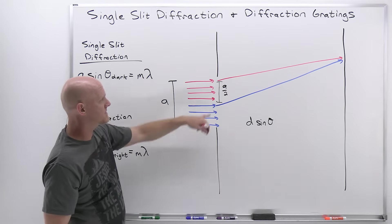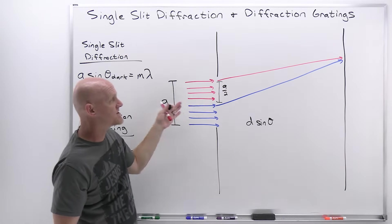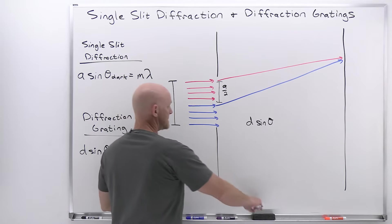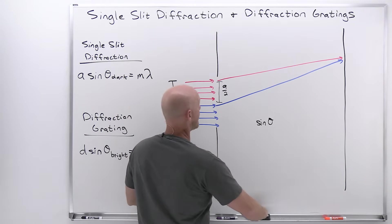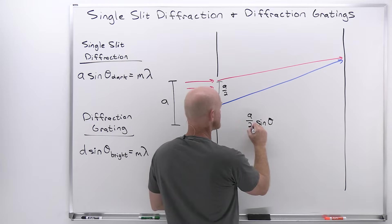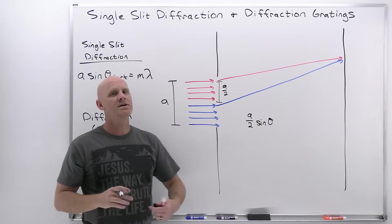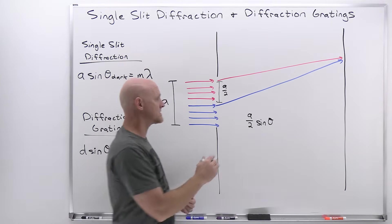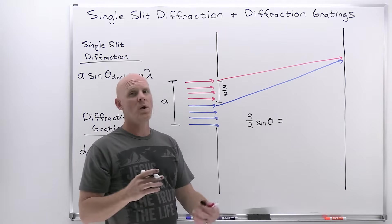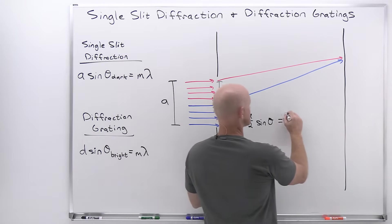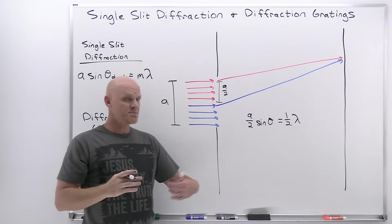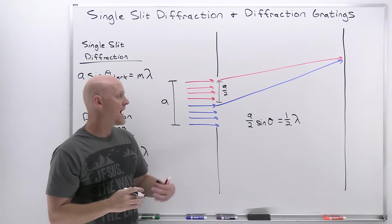In the example we've given here, the distance between where the light rays originate traveling to the same location is not D, but now A over 2. So the path difference is A over 2 times sine theta. If we want the condition for destructive interference, we want this to equal one half lambda.